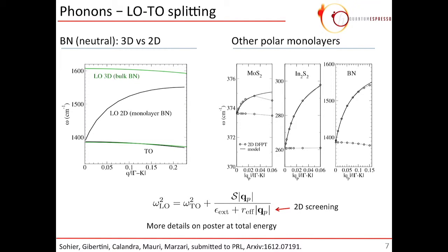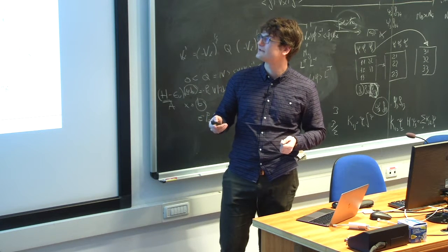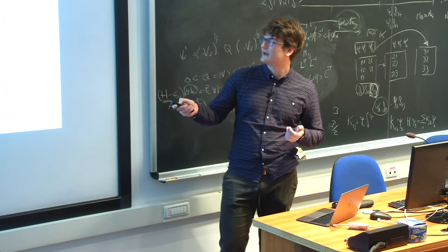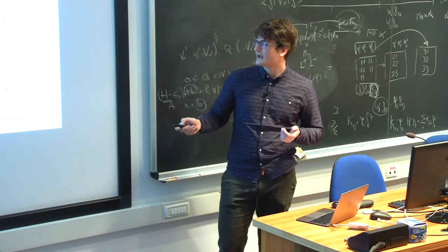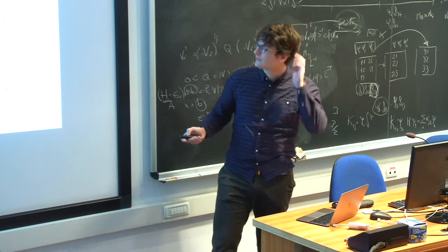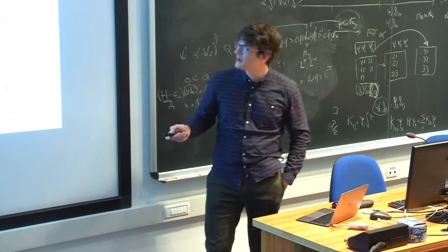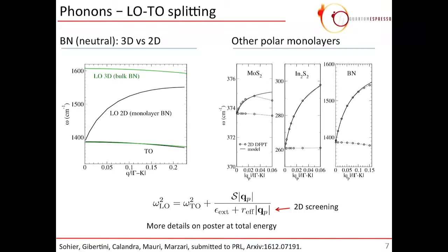For small phonon momentum near gamma, this long-range dipole-dipole interaction becomes highly dependent on dimensionality. We are expecting to see some differences in the phenomenon in 3D or 2D. And indeed, that's what we see if we plot this LO-TO splitting. The dispersion of the TO and LO mode near the gamma point. We see in 3D bulk boron nitride. I chose boron nitride because it has relatively strong effective charges. If we do this in bulk boron nitride using the usual 3D code, we get this constant splitting of the TO mode, which is well-known.